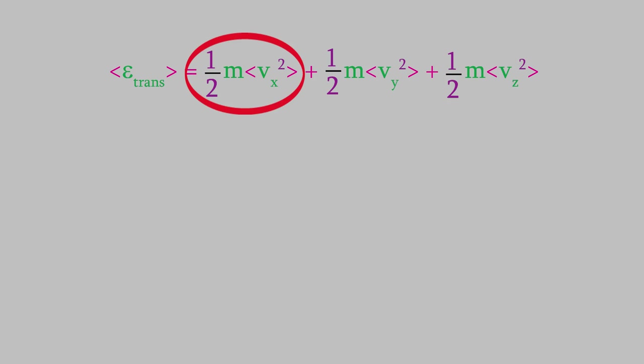The first term on the right side is just the average translational energy for motion in the x direction. And from our earlier discussion of the velocity distribution, we know that we can get that by multiplying the kinetic energy for each possible velocity by the probability of having that velocity and then integrating.